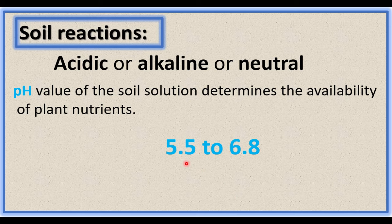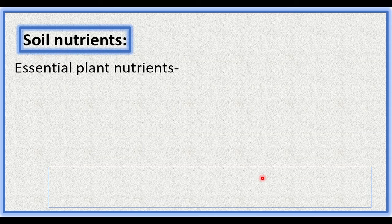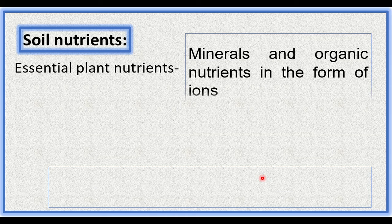A pH range of 5.5 to 6.8 is suitable for plant growth. Soil provides all the nutrients needed for plants. The essential plant nutrients are provided by the soil, which contains minerals and organic nutrients in the form of ions.